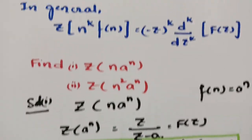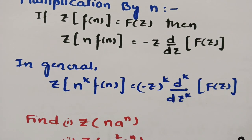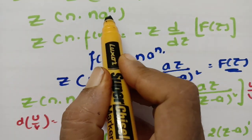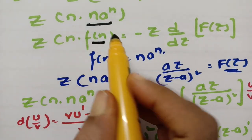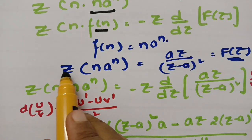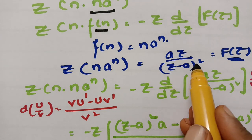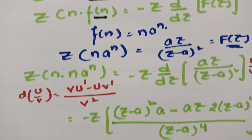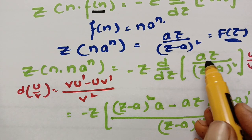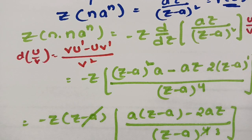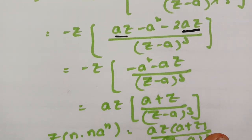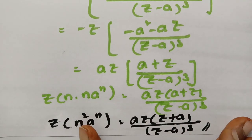For Z{n²·aⁿ}: write n² = n·n, so consider f(n) = n·aⁿ, whose Z-transform is aZ/(Z−a)² = capital F(z). Multiplying by n again and applying the formula minus z times d/dz of F(z), then using the u/v rule and solving, gives the final answer aZ(Z+a)/(Z−a)³.